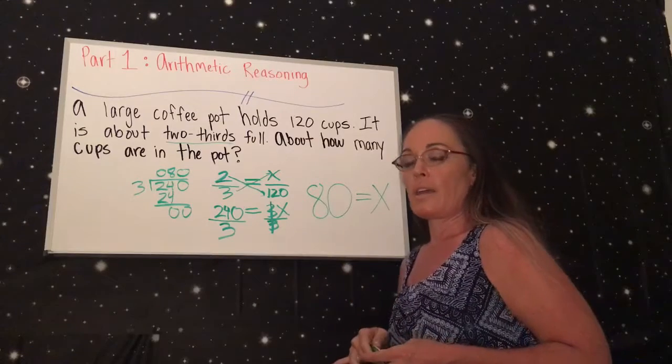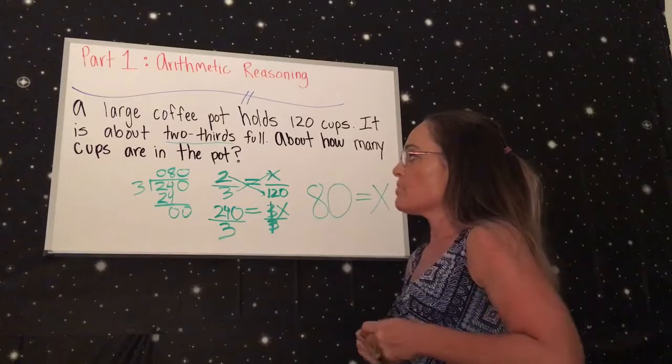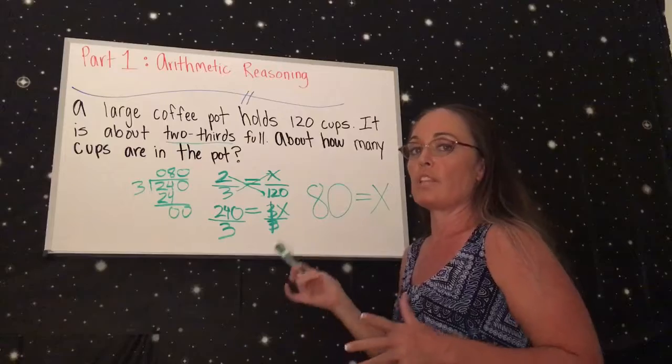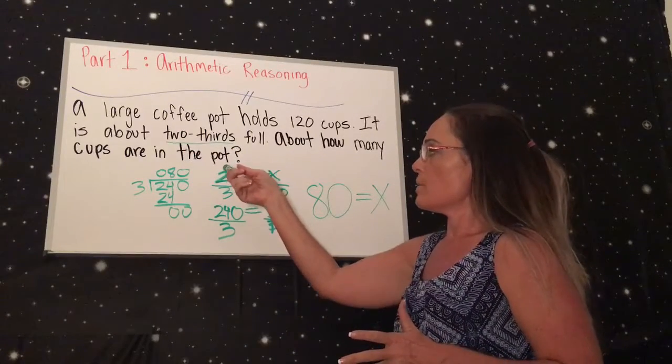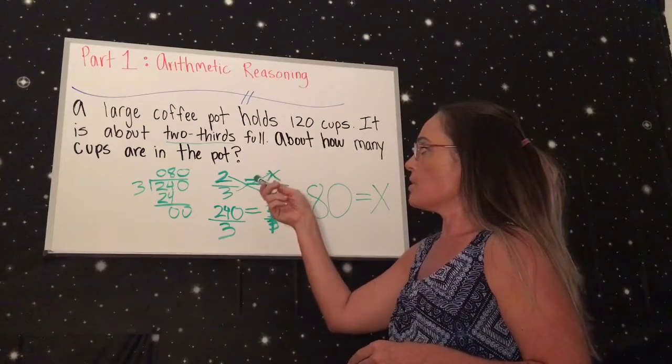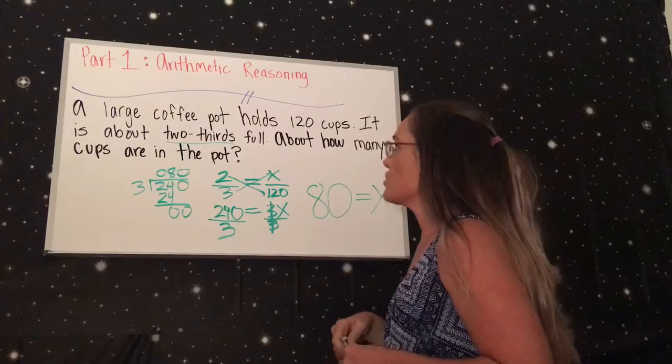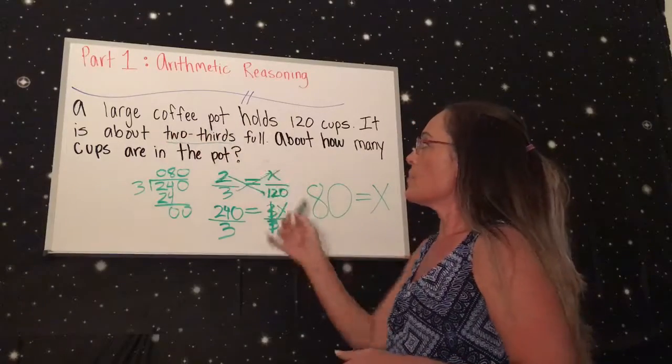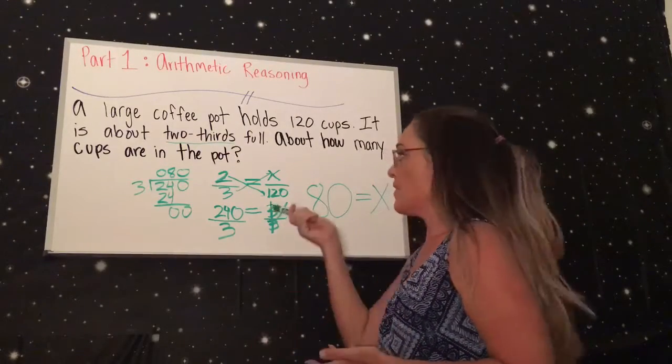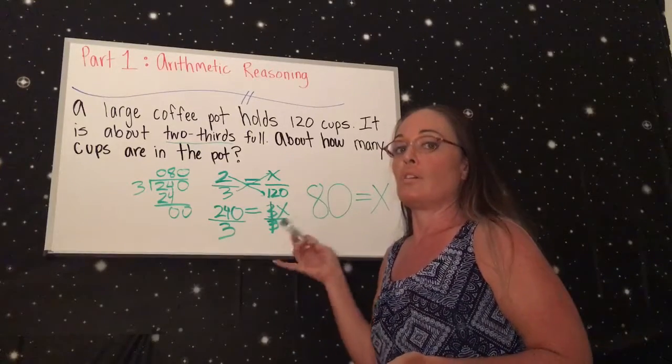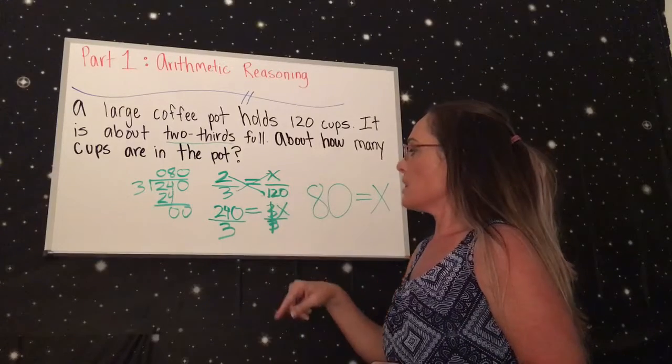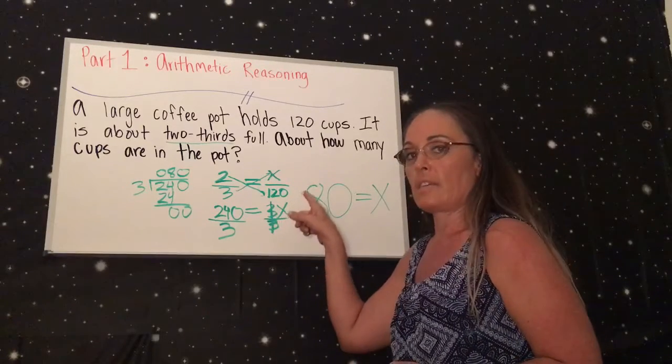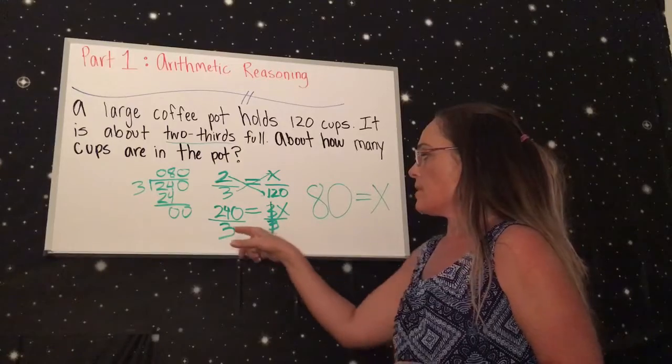Or you can not count the 0 at first and just do 24 divided by 3, get your 8, and then add back the 0 later. This is cross multiplying. You have to ask yourself, where is the fraction in the word problem? More than likely there's always a fraction that you use. We saw the two-thirds, so automatically we set up the two-thirds first to equal a portion over a total. What other information was in here? Is there a total or is there part of a total? They said a large coffee pot holds 120 cups, so that's the total. What don't we know? We don't know the part of the total, so that's why we put the X there. Then you cross multiply, and once you're done cross multiplying, you have to get X by itself. You divide the number next to X on both sides, and then you get your answer.